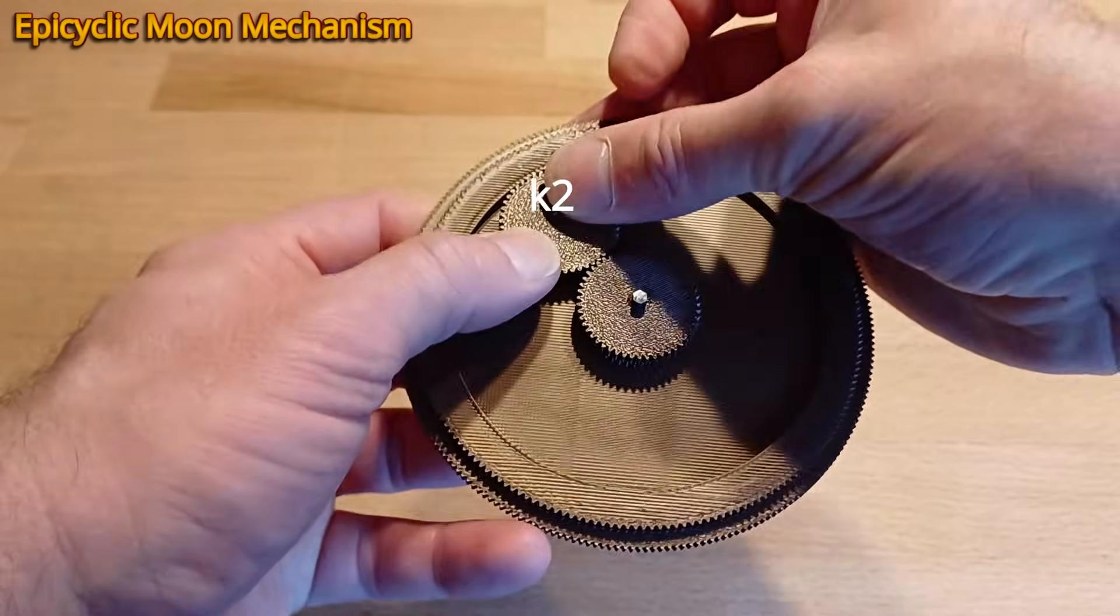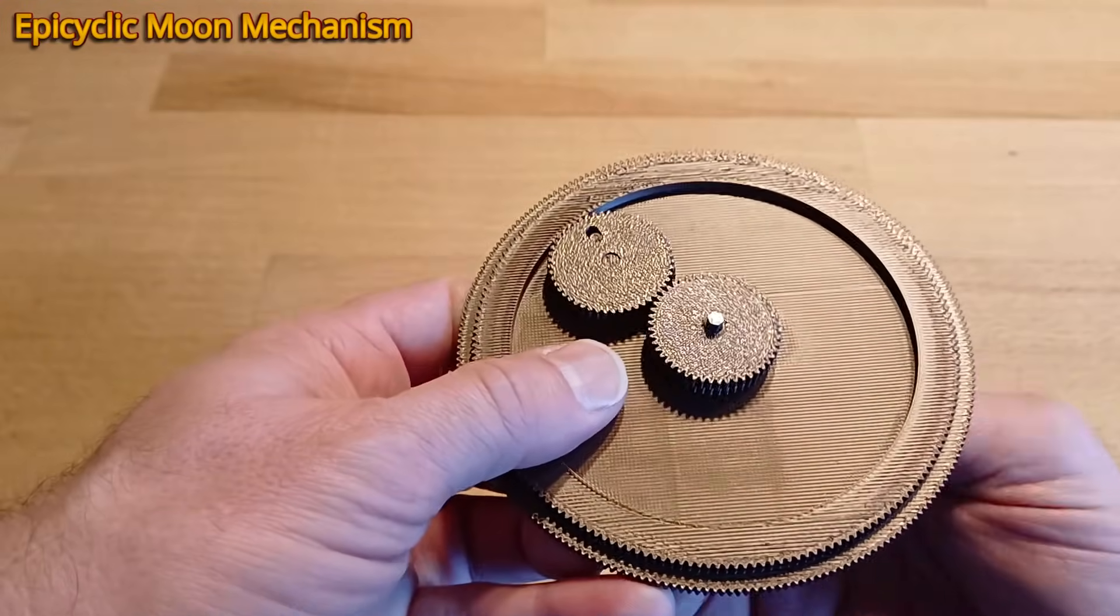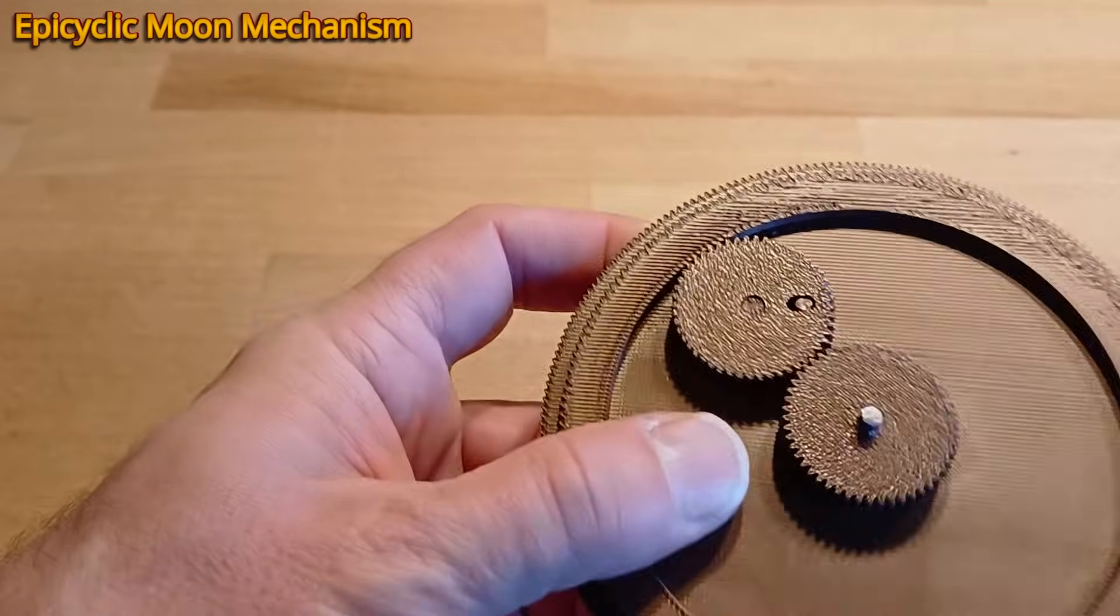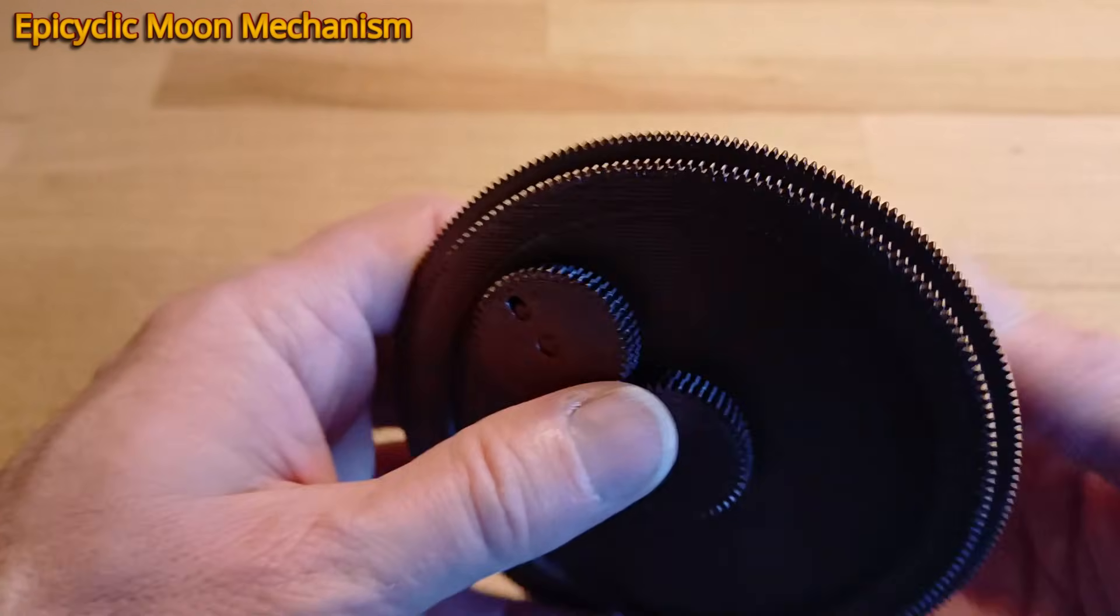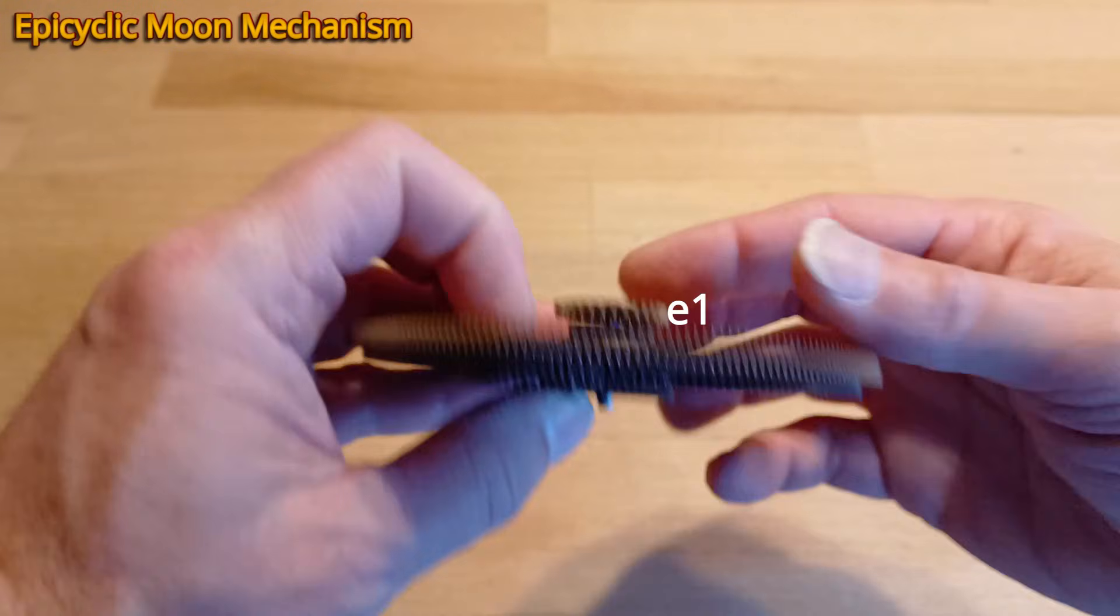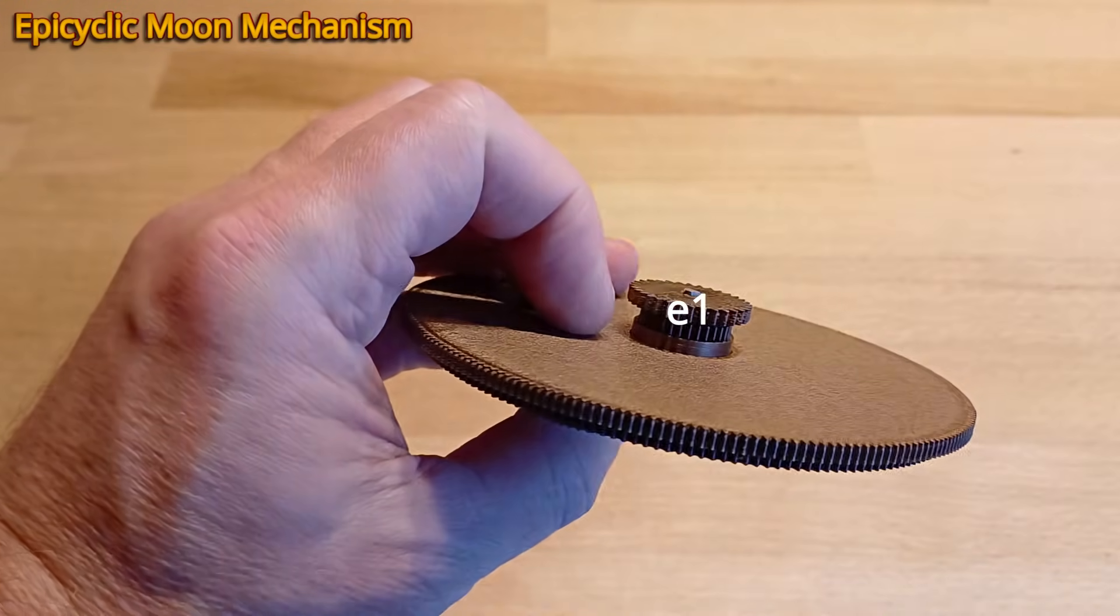And K2 on top of it, which has a slot into which the pin engages. This replicates the moon's varying orbital speed. This is then transferred to wheel E1 on the back and from there upwards to the moon pointer.